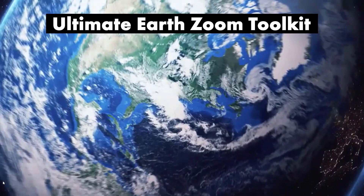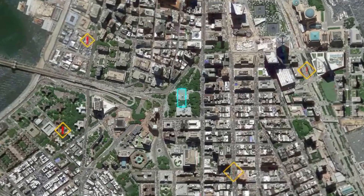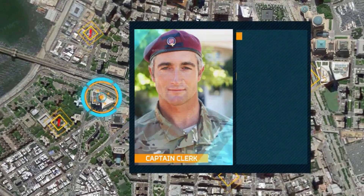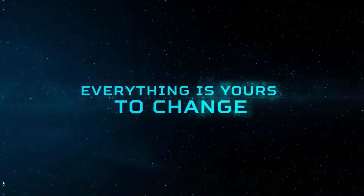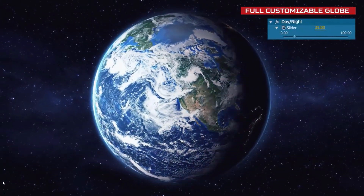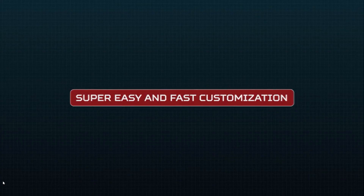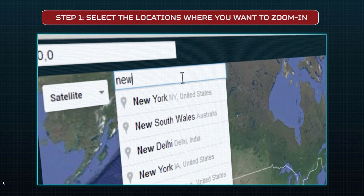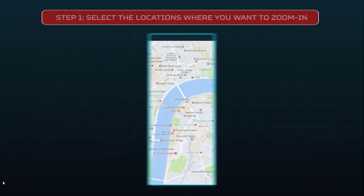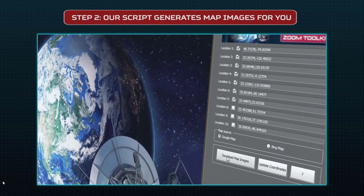The Ultimate Earth Zoom Toolkit is one of the most popular map-related tools you'll find in the Envato Marketplace. One of the reasons for this is it's an extremely easy tool to use — according to the creator, even a 4-year-old can create amazing looking, totally personalized videos. With 120-plus pre-animated elements that all have sound effects, users have a ton of customization options. These pre-animated elements include titles, media holders, info boxes, callouts, markers, pointers, signals, map signs, as well as a handful of icons.